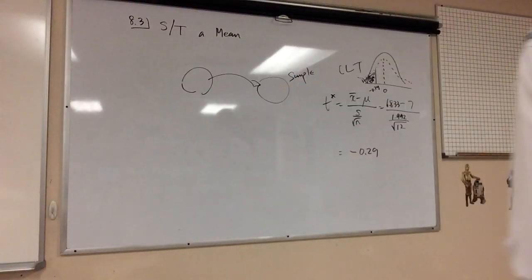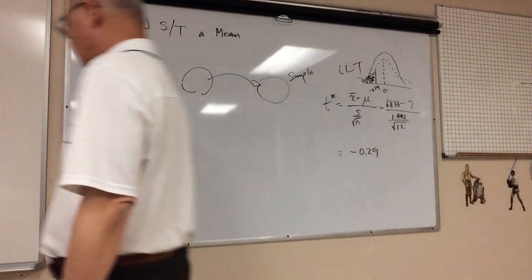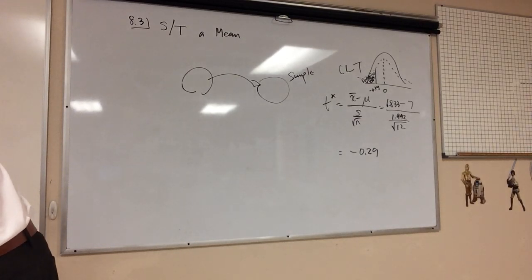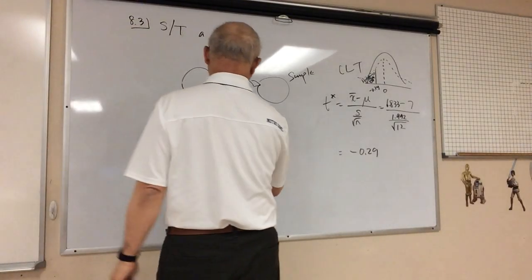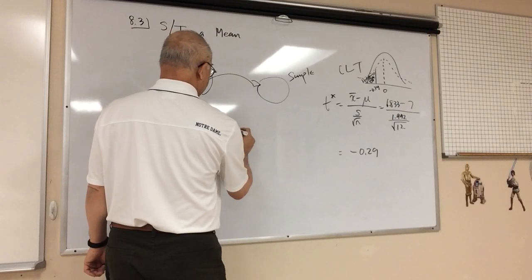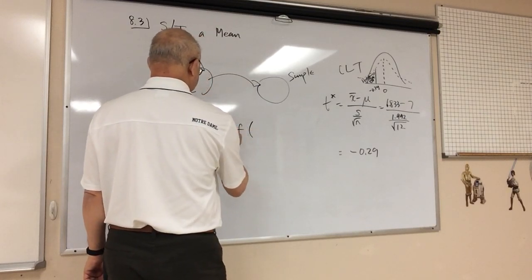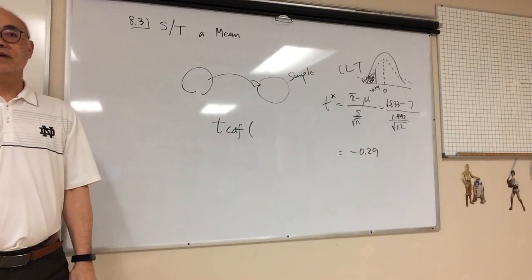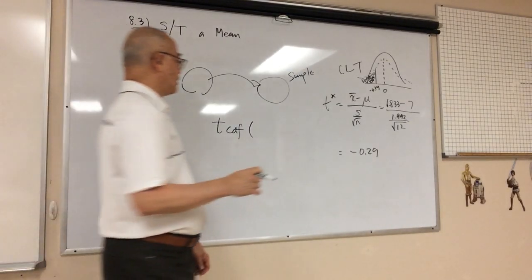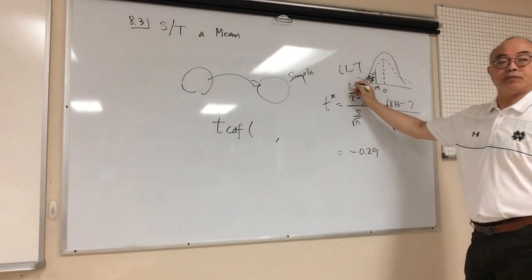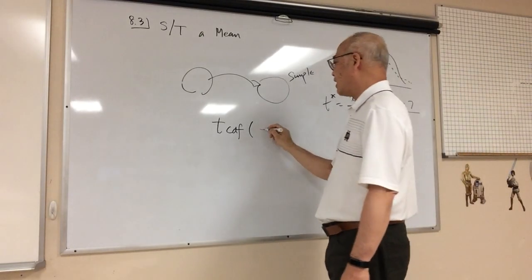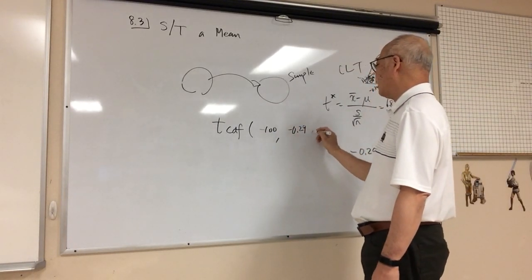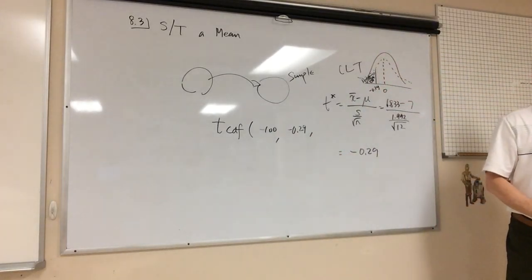So we're going to do a TCDF, right? Stats, TCDF. Actually, it should be a T like this for you guys. TCDF, you find it? Second vars, TCDF. So in the TCDF, I have to find the lower boundary. So the lower boundary is going to be over here. So we'll just say negative 100. To the upper level, which is negative 0.29, and then I have the degree of freedom, which is 11.